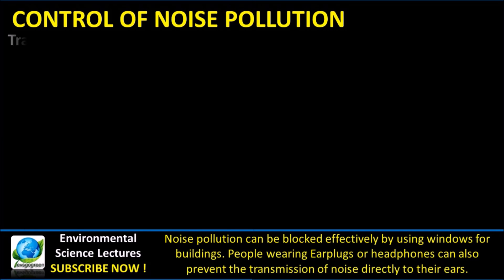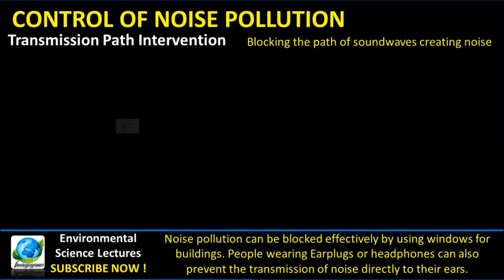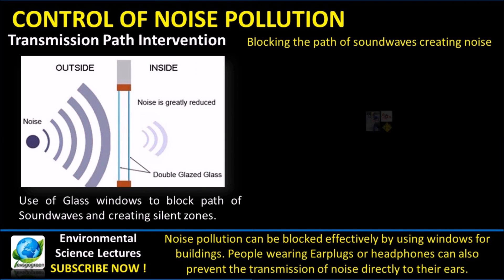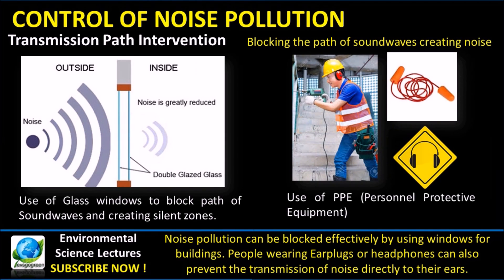Noise pollution can be blocked effectively by using windows for buildings — this is a very simple method. People wearing earplugs or headphones can also prevent the transmission of noise directly to their ears, and this is collectively called personal protective equipment, or PPE.